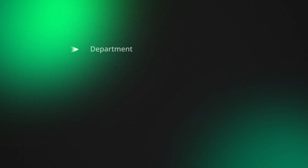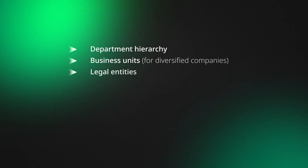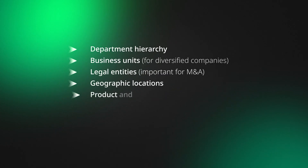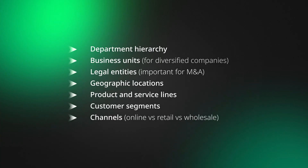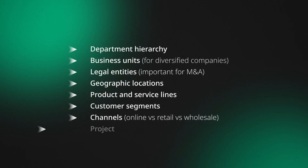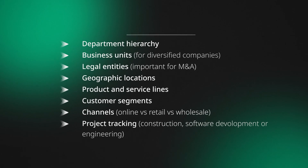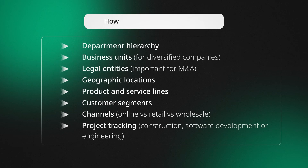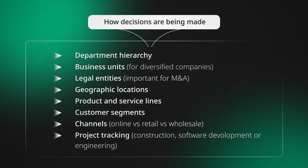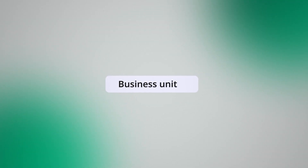Almost everything else is optional. Companies can choose to organize their data by department hierarchy, business units if they're diversified, legal entities — which becomes important with M&A — geographic locations, product and service lines, customer segments, different channels like online versus retail versus wholesale, or even project tracking if you're in construction, software development, or engineering.